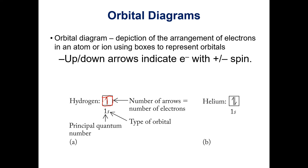When we go to helium, we now have two electrons to put in our box. Remember, electrons cannot have the same spin — if one has an up spin, the other has to have a down spin. Thinking back to quantum numbers, all four quantum numbers cannot be the same for two electrons.